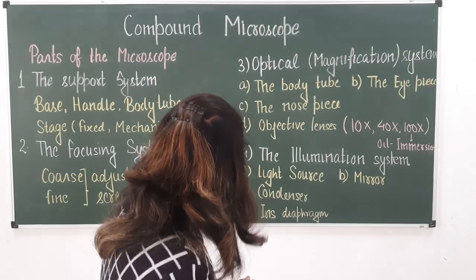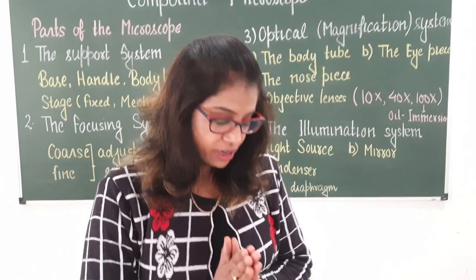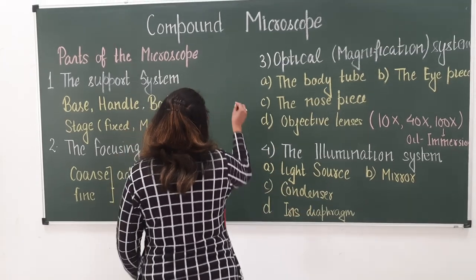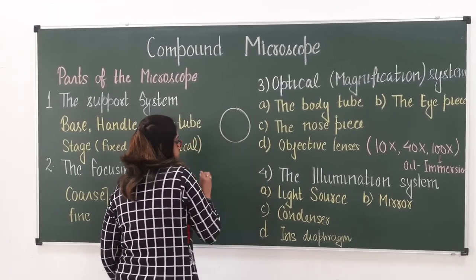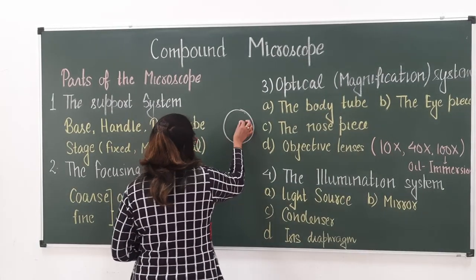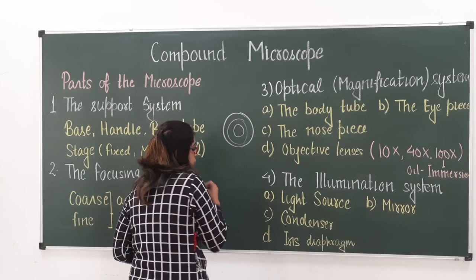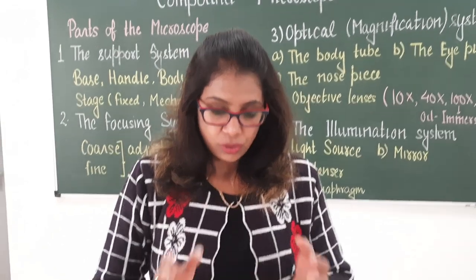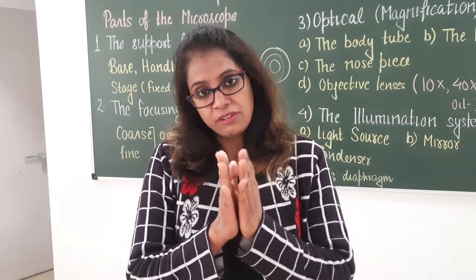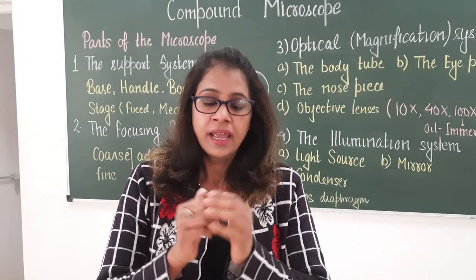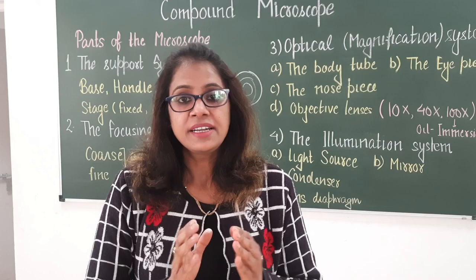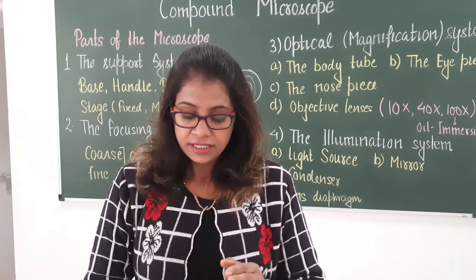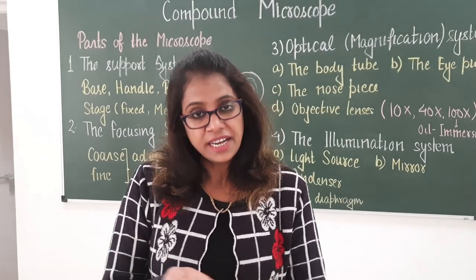There is also an iris diaphragm, similar to the diaphragm in the eye, which controls the amount of light entering. When using the 10x lens, the iris diaphragm is minimally open; with 40x it is more open; and with 100x it is widely open — again to match the numerical aperture.